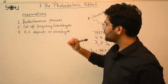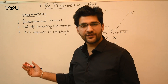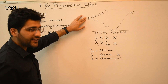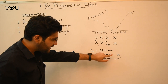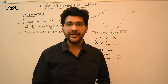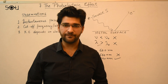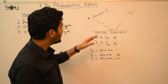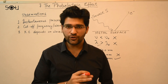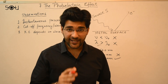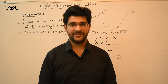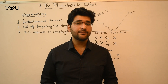The second issue: the wave model could not explain the existence of a cutoff frequency or wavelength. If you use a red source at 660 nanometers on a surface with a cutoff at 620 nanometers, no photoelectrons are ejected. According to the wave model, if you keep illuminating the surface long enough, electrons should eventually accumulate the required energy and be ejected. But experiments show that no matter how long you illuminate the surface or how strong the source is, if the frequency is below the cutoff, electrons will not be ejected.